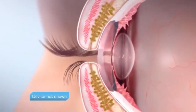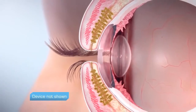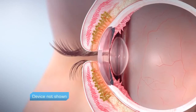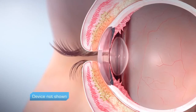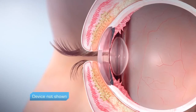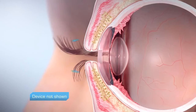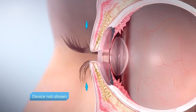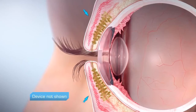The LipiFlow system uses heat and pressure to clear blocked meibomian glands. By applying heat directly to the glands on the inner eyelid surface, heat rapidly and efficiently raises gland contents, liquefying any blockage, making it easier to remove from the gland. Pulsatile pressure is applied to the outer eyelid surface, moving from distal to proximal ends of the glands.